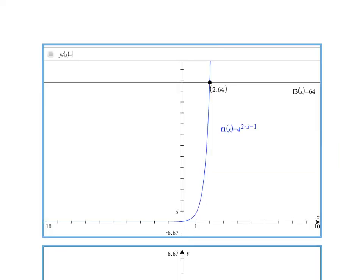Now we're going to verify this algebraic solution of x equals 2 by taking a look at the graph graphically. So you'll notice in blue we have the graph of 4 to the 2x minus 1, and in black we have the graph of y equals 64, the horizontal line, and we can see that they both cross at the point 2, 64.